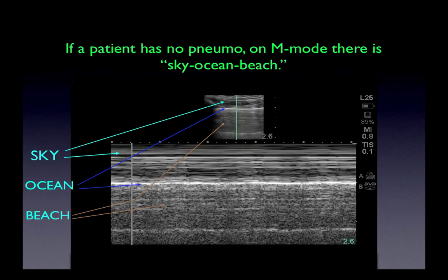If we change from B-mode, or brightness mode, to M-mode, or motion mode, there's what's been nicknamed sky-ocean-beach. The light blue line reveals what is called sky, which is the subcutaneous tissue above the parietal and visceral pleural interface. The ocean, shown with the darker blue line, is the interface itself. And the brown arrow indicates what has been called beach — the sandy appearance. This is what's seen if a patient has no pneumothorax.